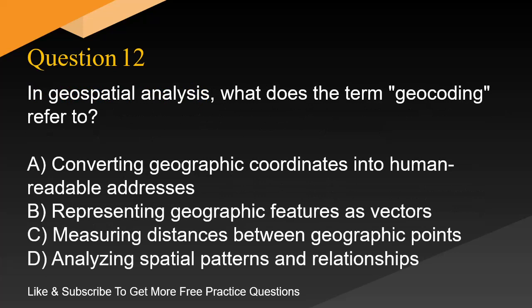Question 12. In geospatial analysis, what does the term geocoding refer to? A. Converting geographic coordinates into human-readable addresses. B. Representing geographic features as vectors. C. Measuring distances between geographic points. D. Analyzing spatial patterns and relationships.